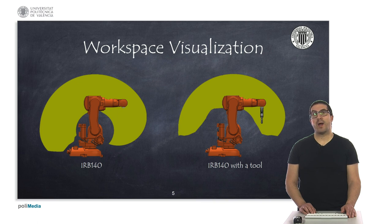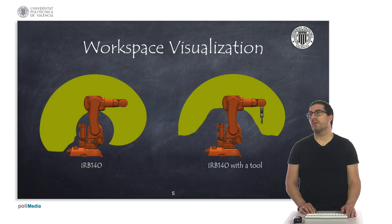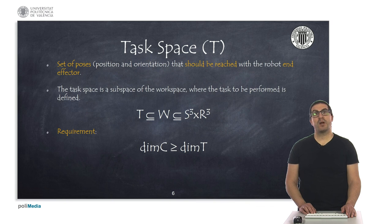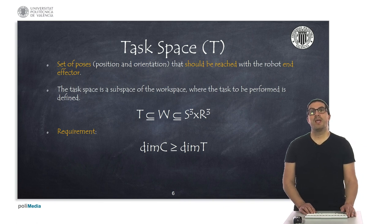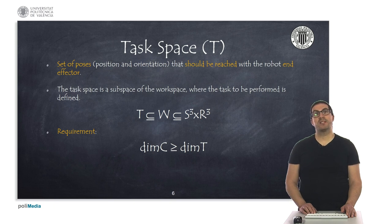As you can see in the image on the right, the workspace shape changes with the tool, and this has been done specifically with a robotic gripper, but with a different tool we would have a different workspace. Another different concept is the robot task space, which is always a subspace of the workspace. This defines the set of positions and orientations that the robot must reach — not all the ones it can reach, but specifically the ones that must be reached by the controller. An important requirement is that the dimension of the configuration space is greater than or equal to the dimension of the task space.